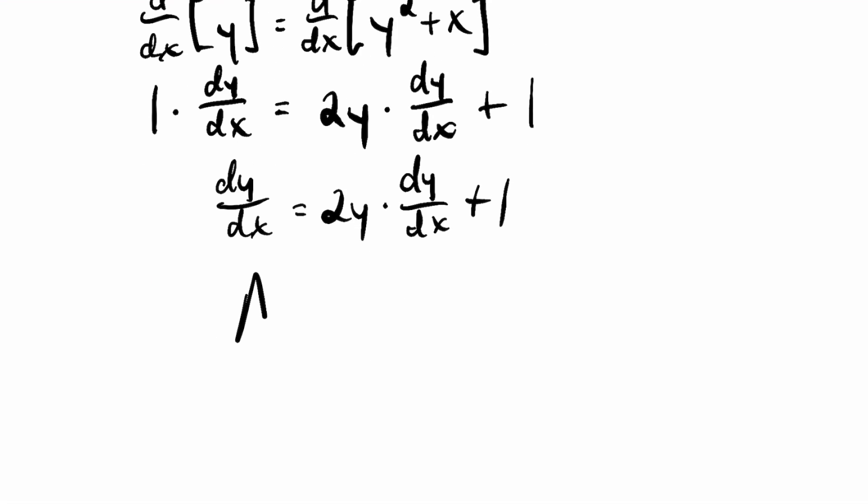And just like if we had a equals 12a plus 1, the first thing I would do is I would subtract 12a on both sides, right? That's how I would get both of the a's on the left. Now, since this is not a number here, we can't just combine like terms. It's a little bit different. You'll see what I mean. So I want to subtract 2y dy/dx on both sides. I'll have dy/dx, and it's already there, minus 2y times dy/dx equals 1.